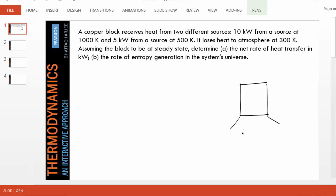So suppose this is our 1000 Kelvin source and it's receiving 10 kilowatts here and 5 kilowatts from a source at 500 Kelvin.